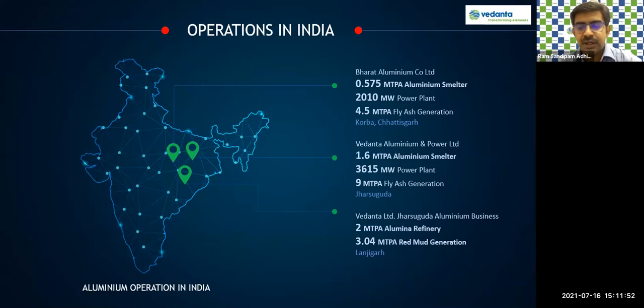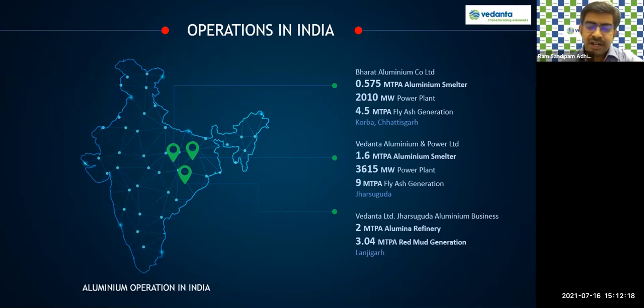Second is Vedanta Aluminium's Jharsuguda location in Odisha — a 1.6 million ton aluminium smelter supported by a 3,600 megawatt power plant generating close to 9 million tons of fly ash every year. There is also a refinery operation in Lanjigarh, Odisha, with a capacity of around 2 million tons, generating around 3 million tons of red mud every year.